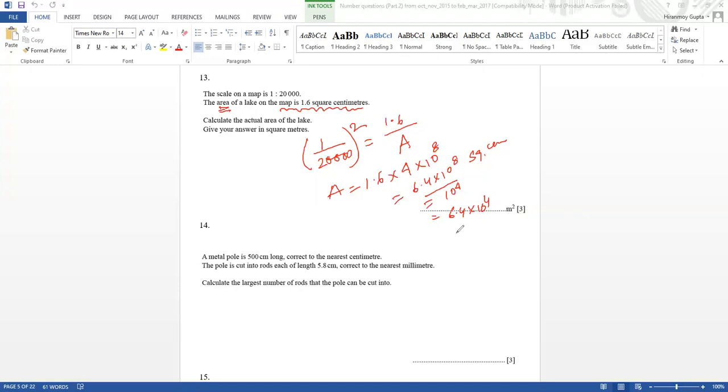Okay, now problem number 14. Anyone else? Okay, I think I got it wrong, so then we can correct it. A metal pole is 500 centimeters long, correct to the nearest centimeter. It is already corrected over here. The pole is cut into rods, each of length 5.8 centimeters, nearest millimeter. Calculate the largest number of rods that the pole can be cut into.